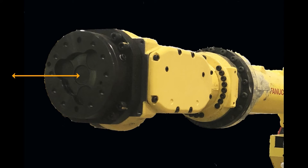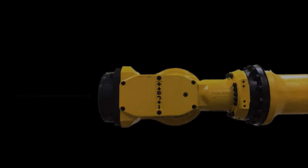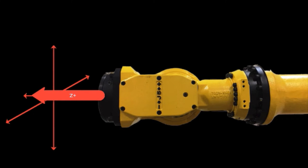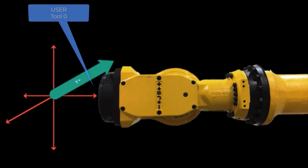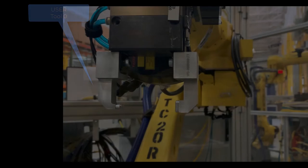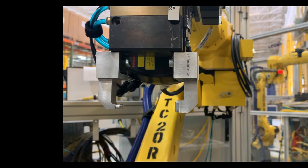The second coordinate system has its origin at the center of the faceplate of the robot, and its orientation moves with the faceplate of the robot. This system is called user tool zero. These two coordinate systems can be used to move the robot, but more importantly, they can be used to create additional user and tool frames.